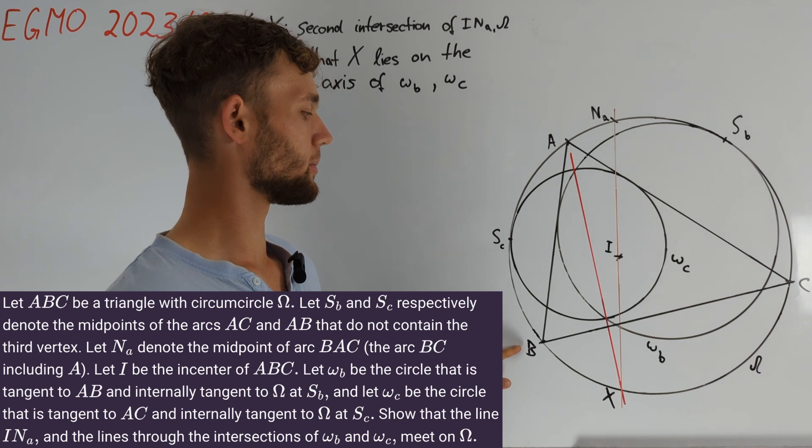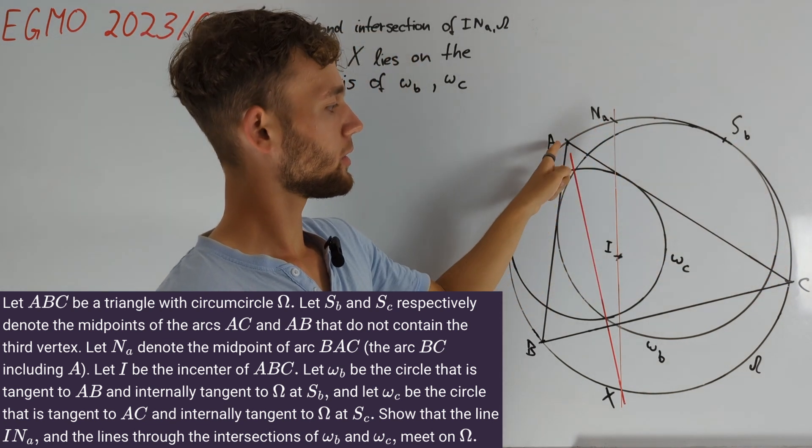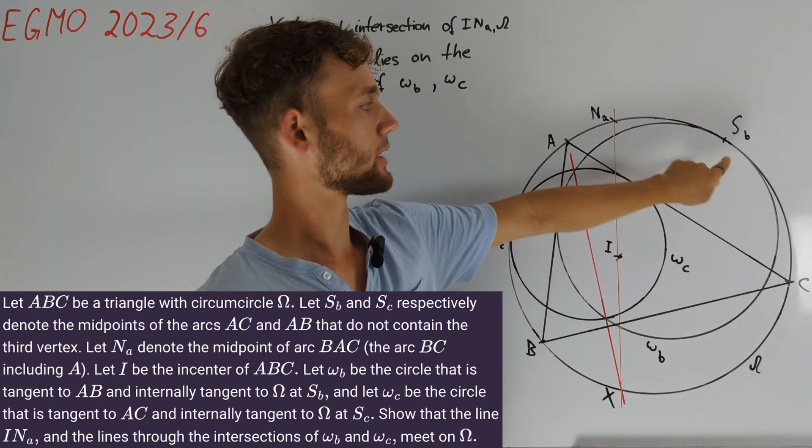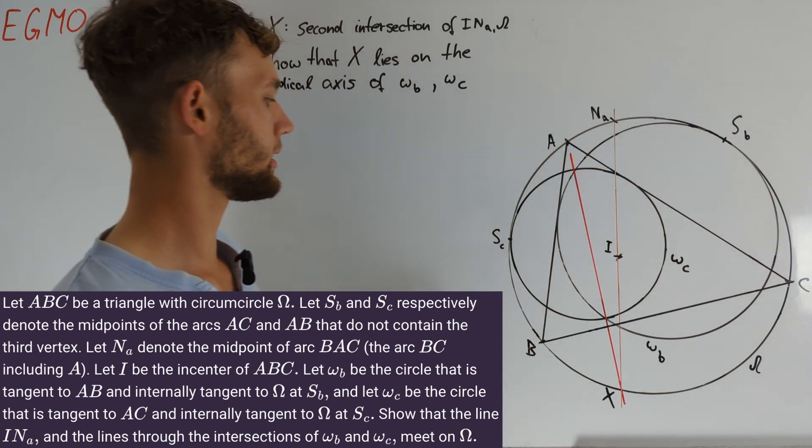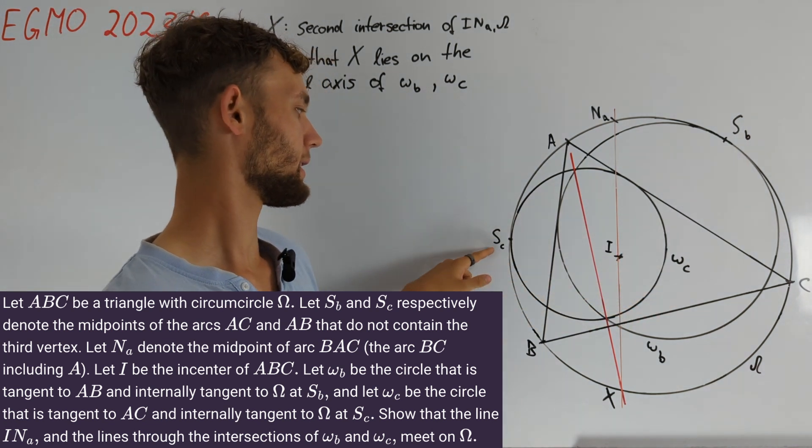We consider a triangle ABC with circumcircle omega and incenter I. Moreover, we denote the midpoint of arc BC that contains A with NA, the midpoint of arc AC that doesn't contain B with SB, and similarly the midpoint of arc AB that doesn't contain C with SC.